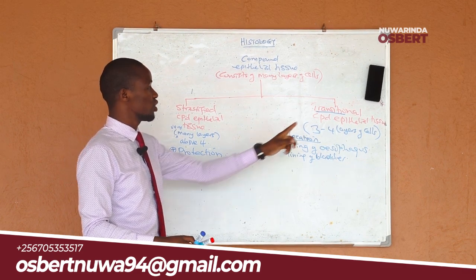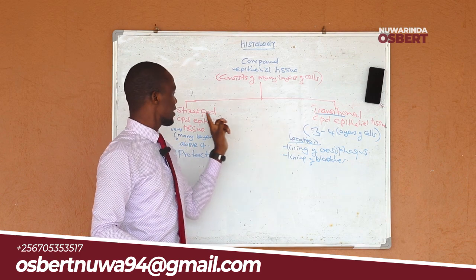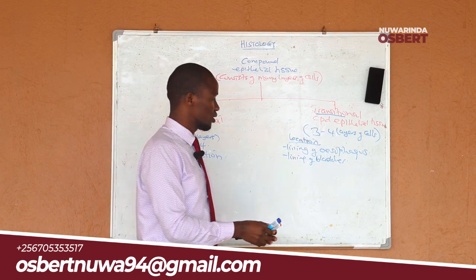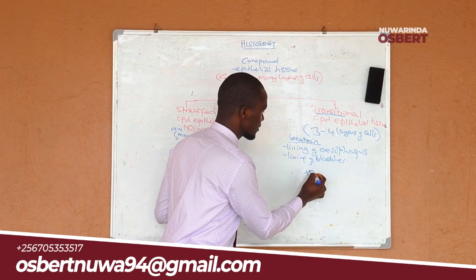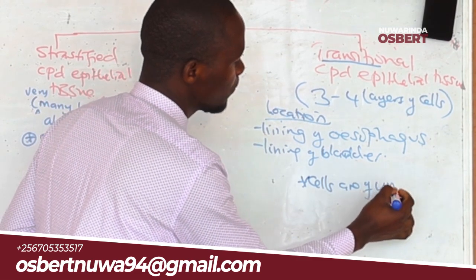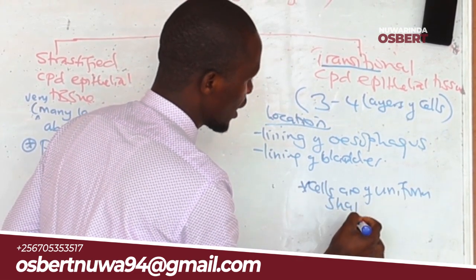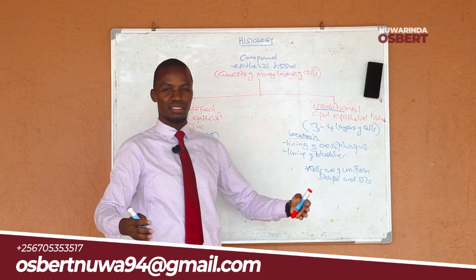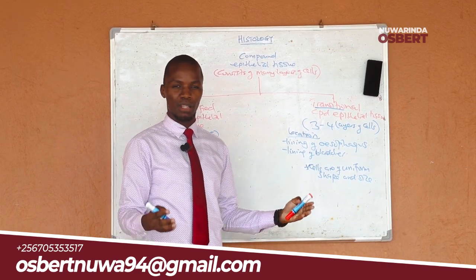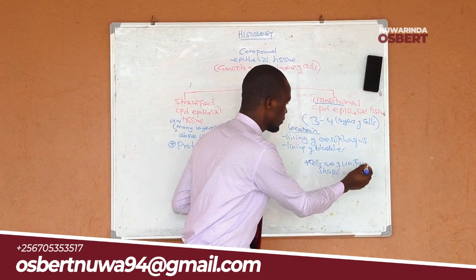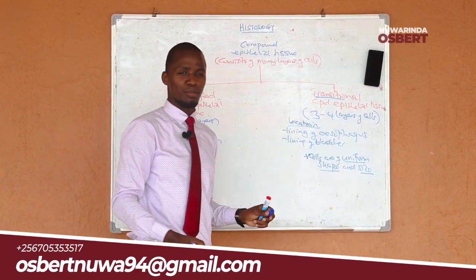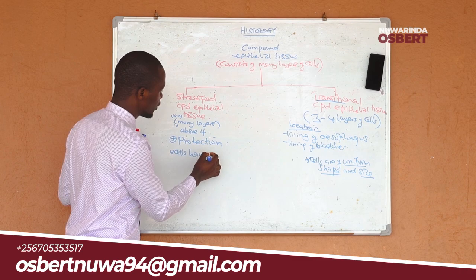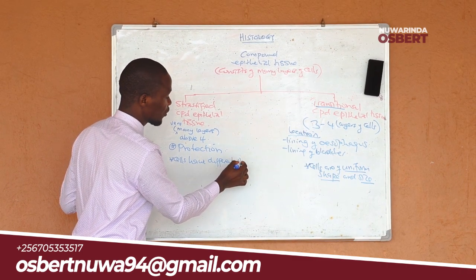Another difference between stratified and transitional is that in transitional epithelial tissue, the cells are of uniform shape and size — leaving aside the transitional shape changes due to stretching. But in stratified epithelial tissue, the cells have different shapes.